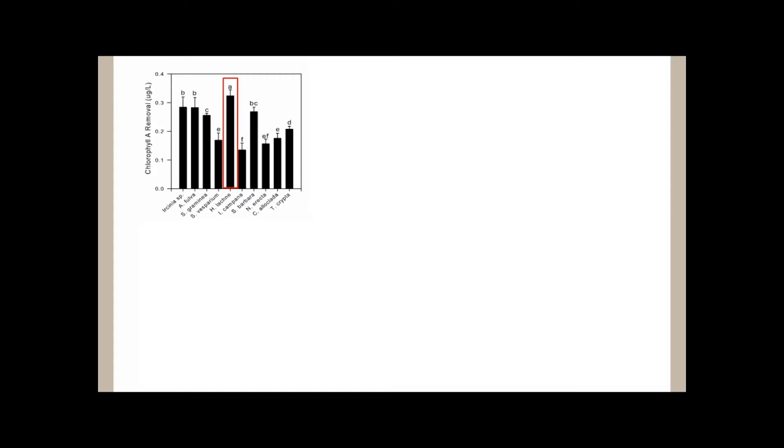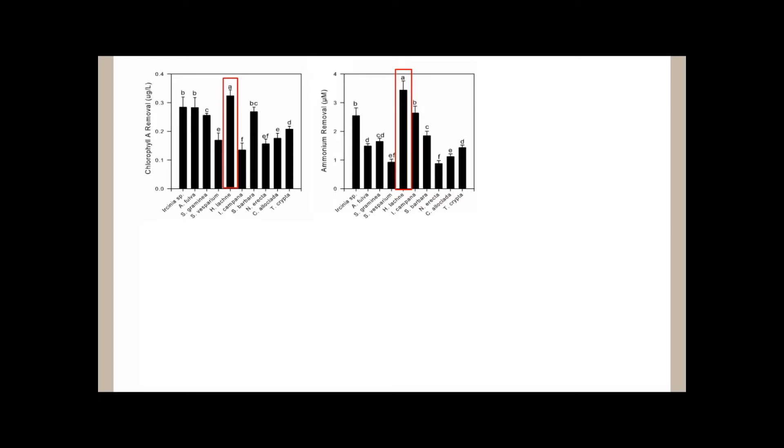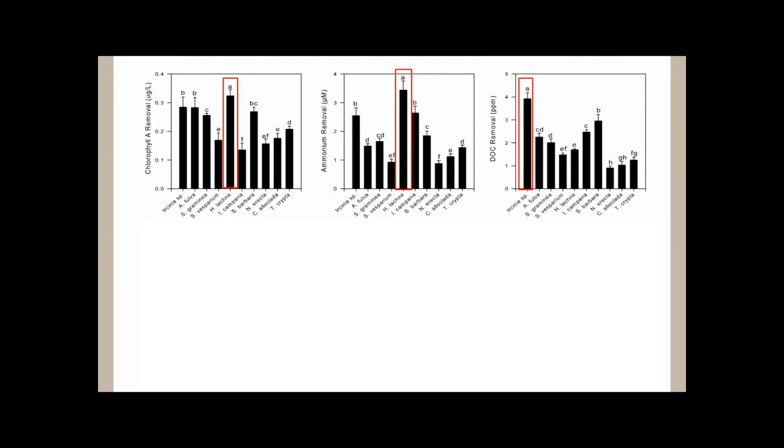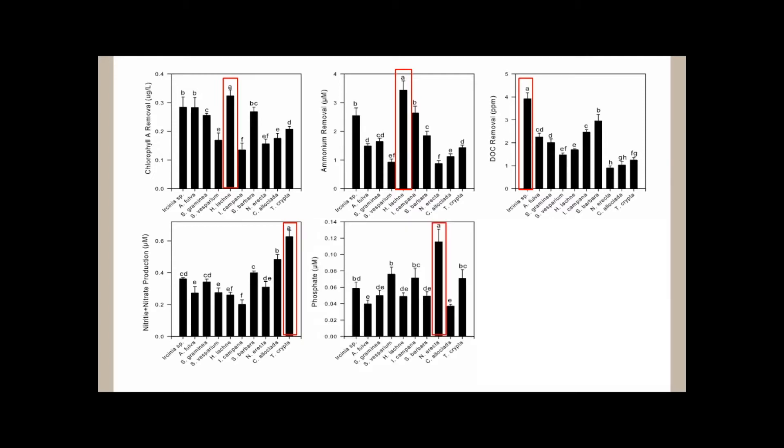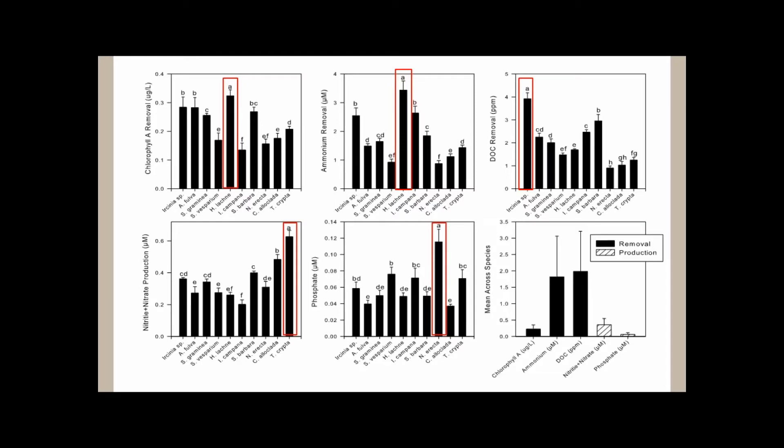But if we want to look at it by species, we see the greatest chlorophyll A removal by Hippospongia lochni. That's the sheep's wool sponge. It is a common commercial bath sponge. It's about medium-sized black. It's quite a soft sponge. And if we look at ammonium removal, again, Hippospongia lochni is our most important species. But then when we look at DOC removal, far and away the species that has the largest effect is a species of Ursinia. This is a brown branching sponge. If we look at nitrate nitrite production, the most production is by an LMA sponge. This is Tethyoteca crypta. And then the largest amount of phosphate removal is by Nyphades erecta, another LMA sponge.